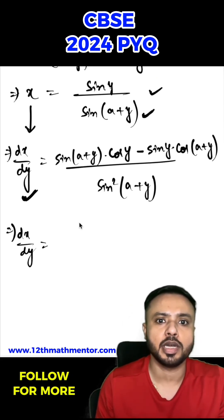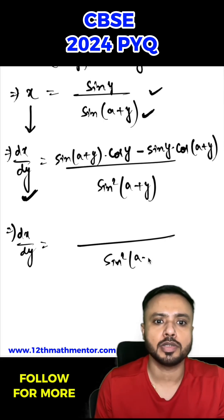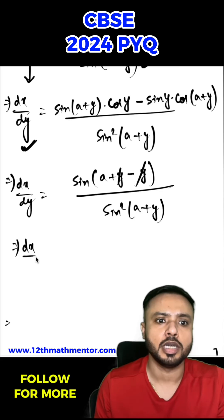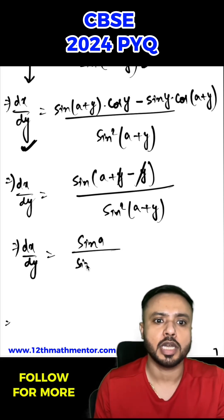So dx/dy can be written with sin²(a+y) in the denominator. But in the numerator, it's sin a cos b - cos a sin b, which is sin(a-b). So I can write it as sin(a+y-y). The y's cancel, so I get dx/dy = sin a / sin²(a+y).